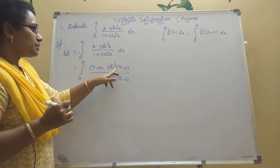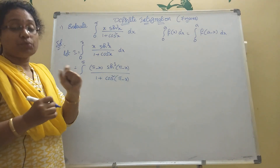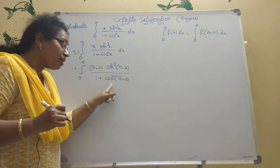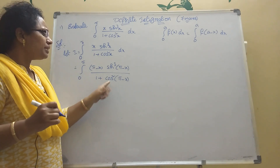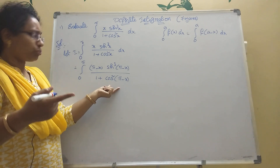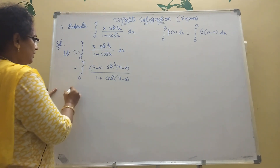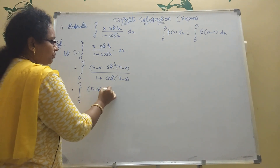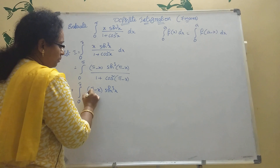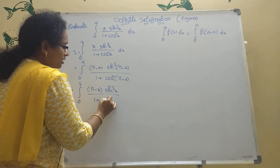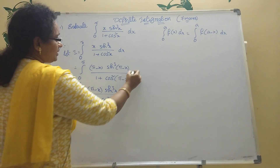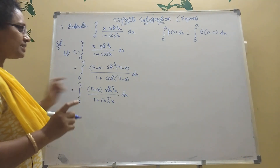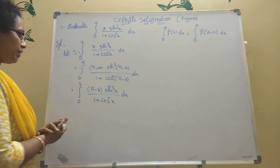Now sin(π − x) is in the second quadrant — sin is positive and cos is negative there. But cos²(π − x) has a square, so it becomes positive only; there is no change. So sin cube of (π − x) = sin³x, and cos²(π − x) = cos²x.